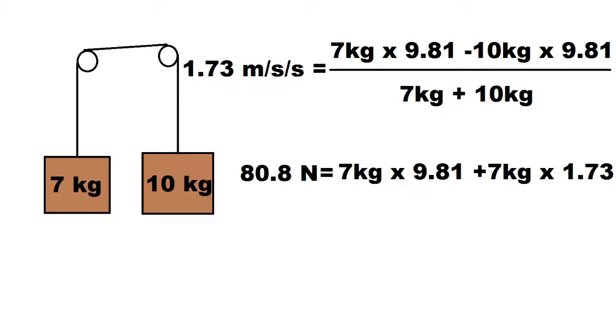If we add those two forces we get the tension in the rope or wire. You can also get the tension by taking 10 kilograms times the acceleration due to gravity minus the acceleration of the system. Hope this video helped. Thanks for watching.